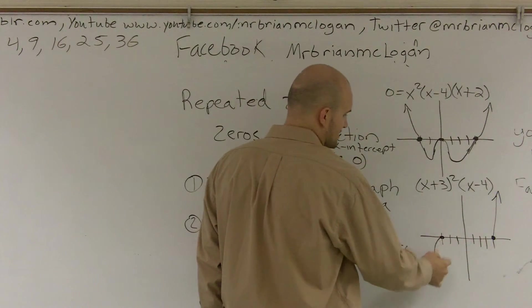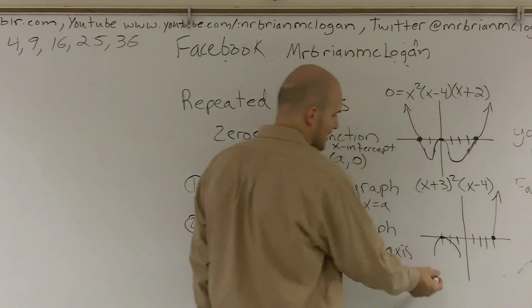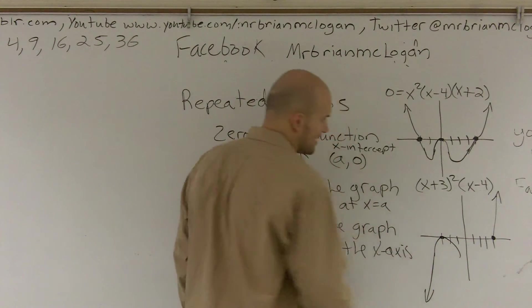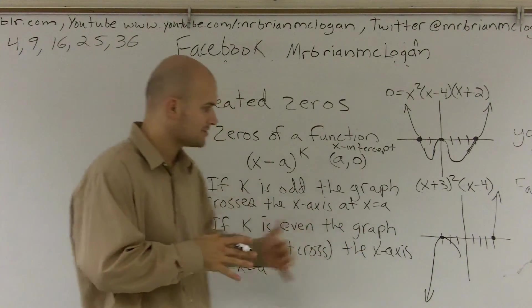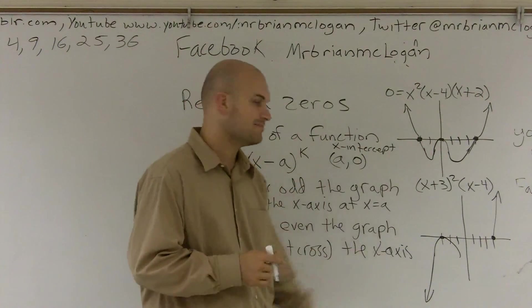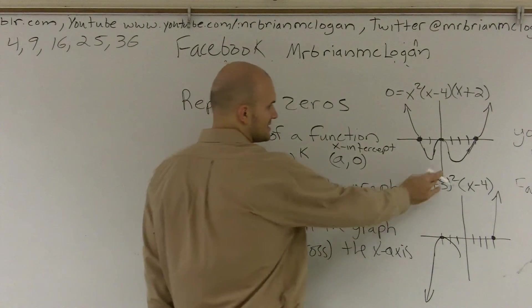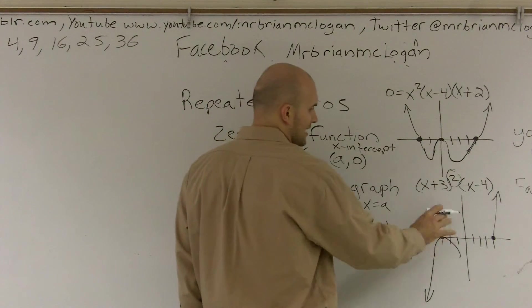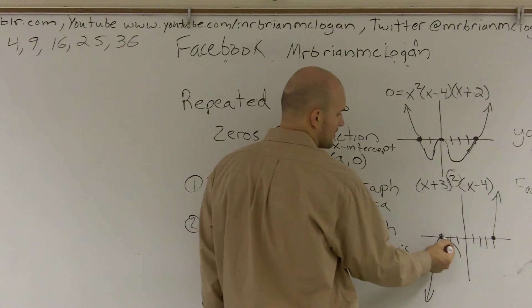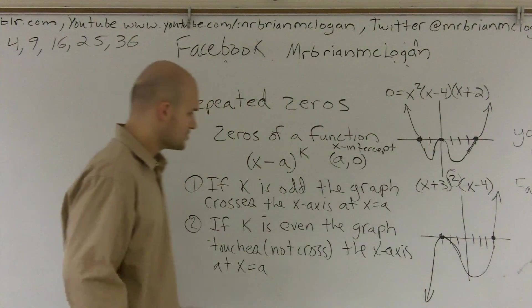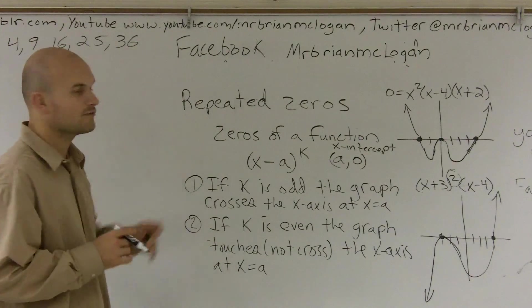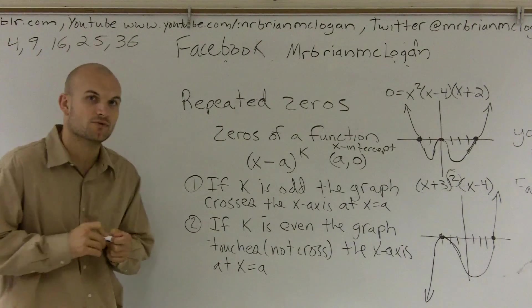And then at negative 3, I know this is going to open down because these are my two end behaviors. And this is just something I worked on from my first overview video if you watch it. You can determine how to find what the end behavior is. And since this is a multiplicity of 2, I know it's going to be opened downwards. And then I can just connect the two graphs. And since this one is odd, I know it's going to cross. So that's just a quick overview of repeated zeros and how multiplicity works.